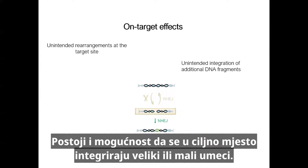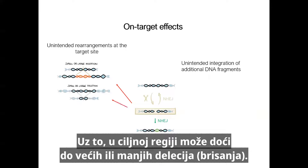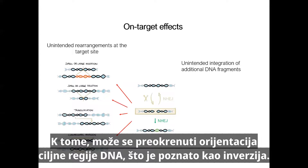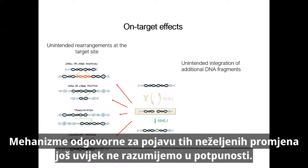There is also the possibility that large or small insertions are integrated into the target site. In addition, large or small deletions can occur in the target region. Plant DNA sequences can also be incorporated at another part of the genome, which is called a translocation. In addition, the orientation of the target DNA region can be reversed, which is known as an inversion. The mechanisms responsible for the occurrence of these unwanted changes are not yet fully understood.